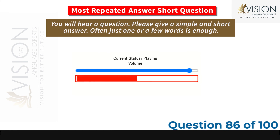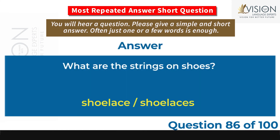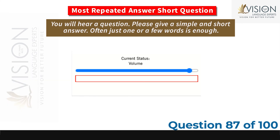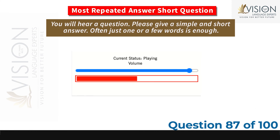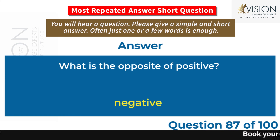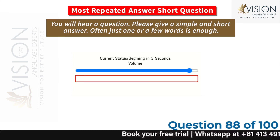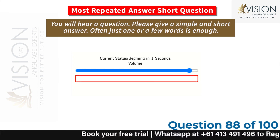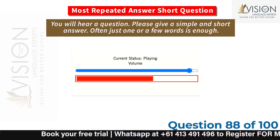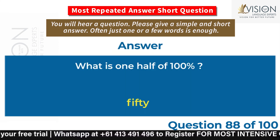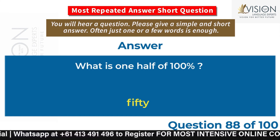What are the strings on shoes? Shoelaces. What is the opposite of positive? Negative. What is one half of one hundred percent? 50.